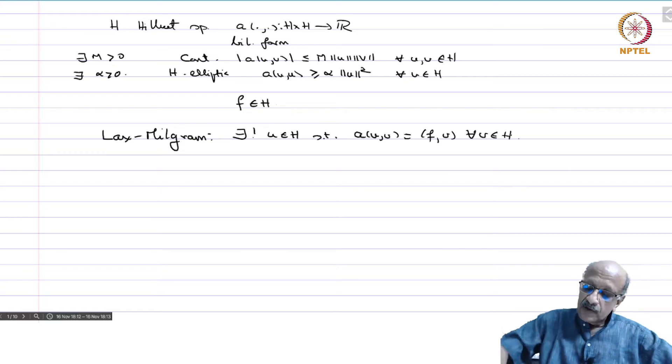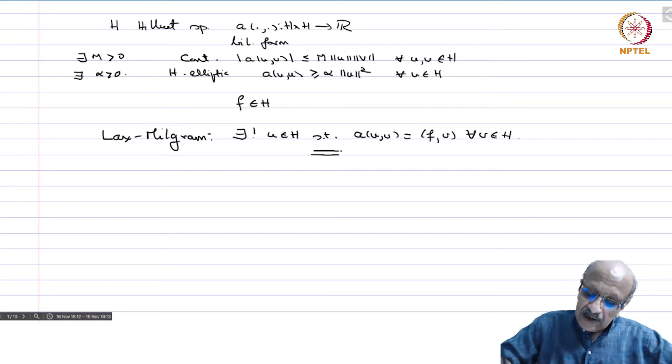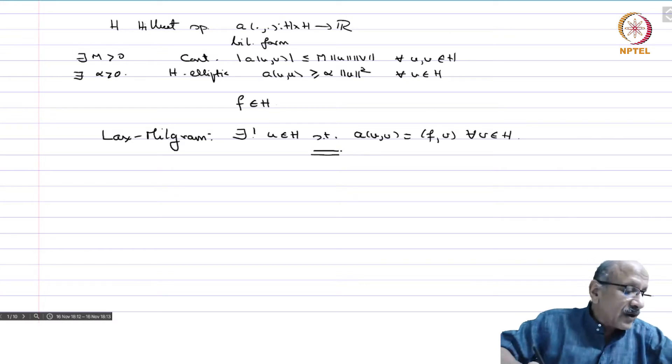We also saw in the exercises you could do it for subspaces. Now, the ellipticity condition is always a strong one and it's difficult to have. Here is one which relaxes it under some conditions.